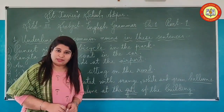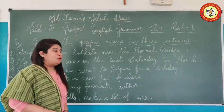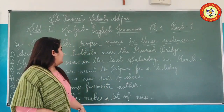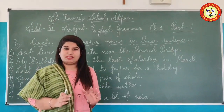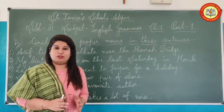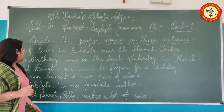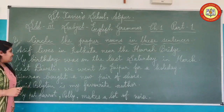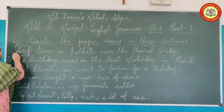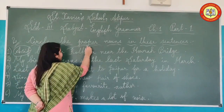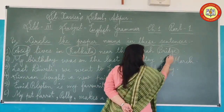Now you are all clear about the common noun. In your next exercise, we will be starting with the proper noun. In your second exercise, we are going to circle the proper nouns in these sentences. What is a proper noun? They are special names given to any person, place, animal, or thing, and they always start with a capital letter. First sentence: 'Asif lives in Kolkata near the Howrah Bridge.' First of all, Asif — it is the name of a person. Then Kolkata, name of a place, and Howrah Bridge, the name of a landmark.